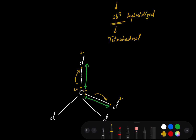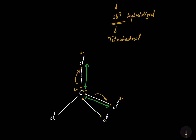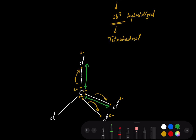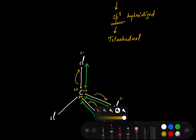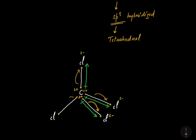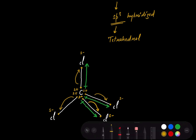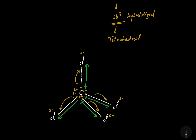Now let's talk about the third chlorine. Again, electronegativity of chlorine is greater than carbon, so chlorine attracts the shared pair of electrons towards itself. Chlorine acquires a delta-negative charge and carbon acquires a delta-positive charge, so the third vector points towards chlorine with its tail towards carbon. For the fourth chlorine, the same applies — chlorine attracts the shared electrons, acquires delta-negative charge, and the fourth vector points towards the fourth chlorine with its tail towards carbon.